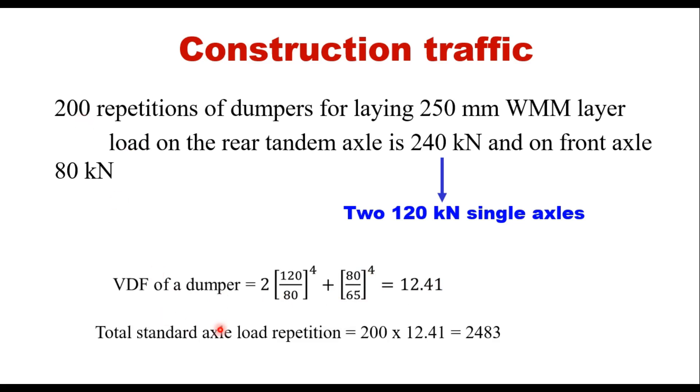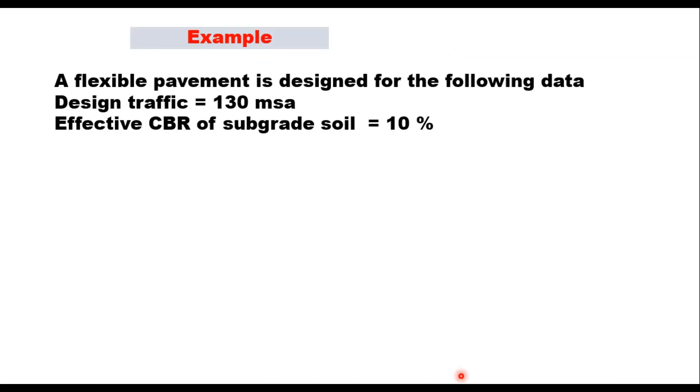Now this is just one example assuming certain repetitions here. If you have correct value of repetitions, then you can calculate this value very correctly. But what I suggest: either you take the calculated value here or 10,000, whichever is more. So thickness of subbase layer should be sufficient to carry a traffic of 10,000 standard axles without creating strain on the subgrade which is beyond the permissible strain. Now let me explain this again through one example.